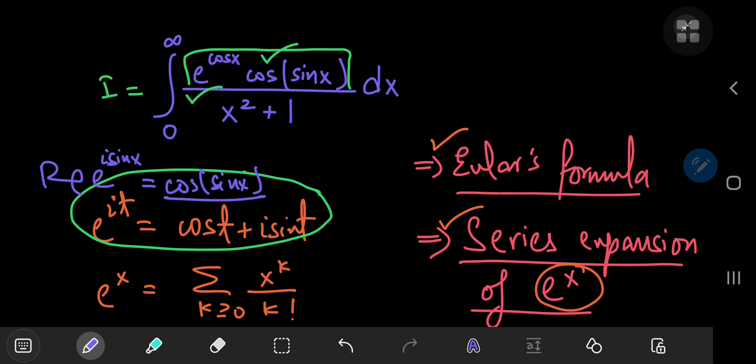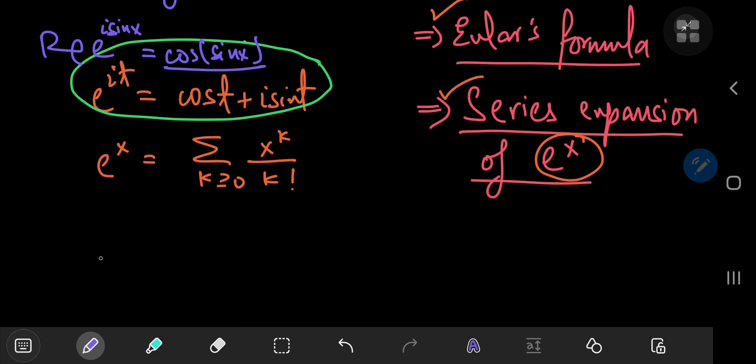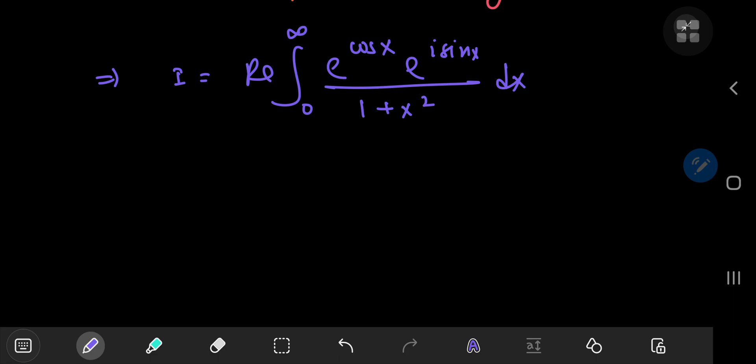So that means we can write our integral I as the real part of the integral from 0 to infinity of e to the cosine of x, and that trig function here is now converted into e to the i times sine x divided by 1 plus x squared, integration with respect to x.